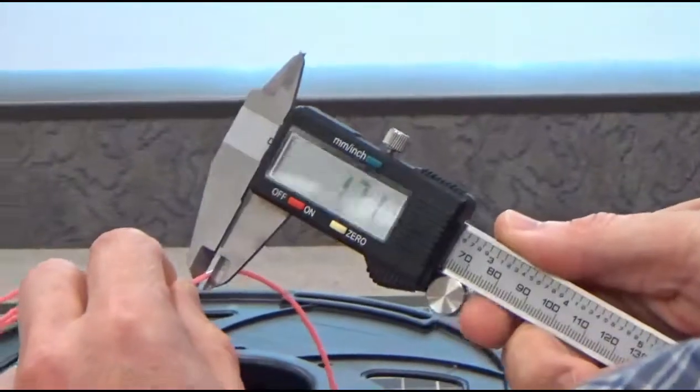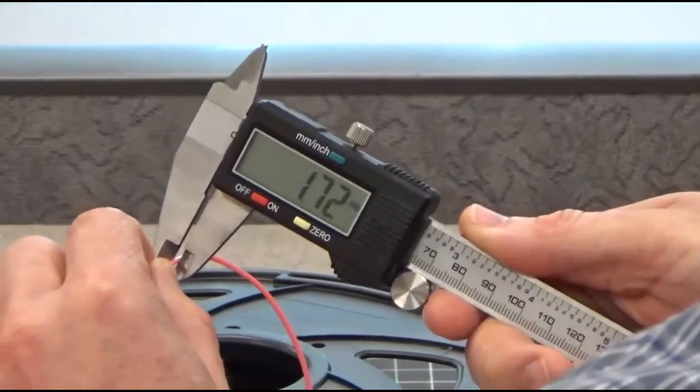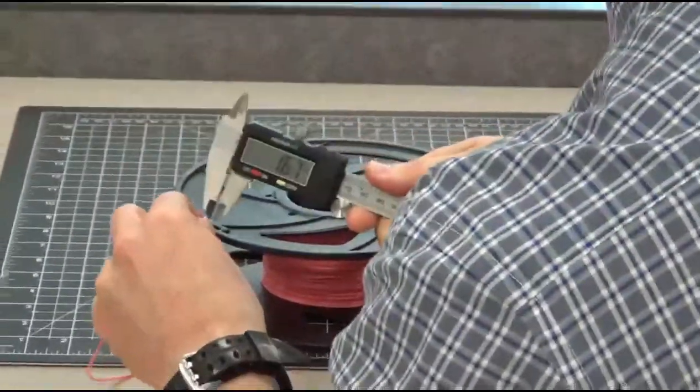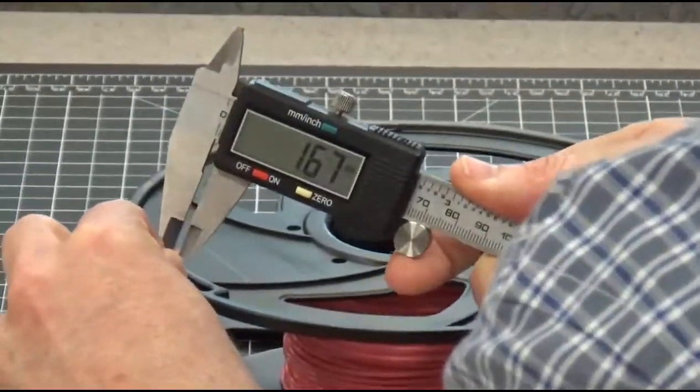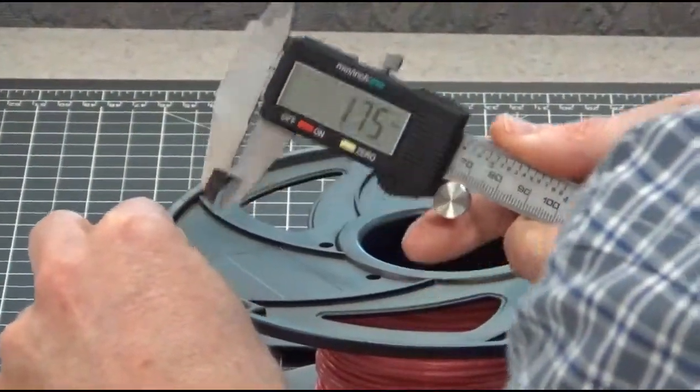So we will do some random checks on our filament. We can see that we've got a measurement of about 1.71 millimeters here. And we move on down the filament a little bit, checking another point, and we find out that it is 1.75, dead on target where it's supposed to be.